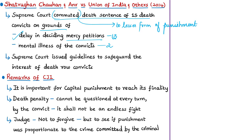This case law is titled Shatrughan Chauhan and Another vs. Union of India and Others. In the judgment, the apex court primarily held that an unexplained delay in carrying out an execution could lead to commutation of death penalty to life imprisonment. In the same judgment, the court issued guidelines to safeguard the interests of death row convicts. Today's news is that the central government has filed an application at the Supreme Court to modify some parts of these 2014 guidelines. The Chief Justice of India then made some statements on death penalty while hearing review petitions filed by two persons convicted of death penalty for the murder of seven relatives.